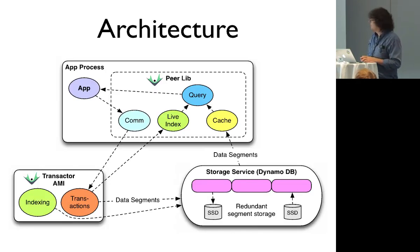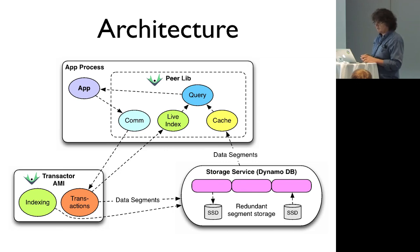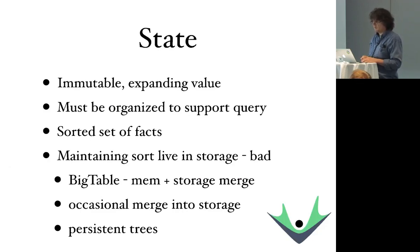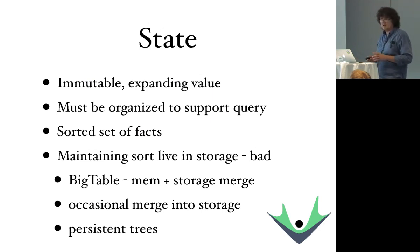Let's look at the architecture more close up. The application process uses a peer library with communications components, something that represents the index, a caching component, and a query component. The transactor has indexing, transactions, and storage. The first thing we have to deal with is state — how is the database a value? How can you think of something that is getting new facts as a value?